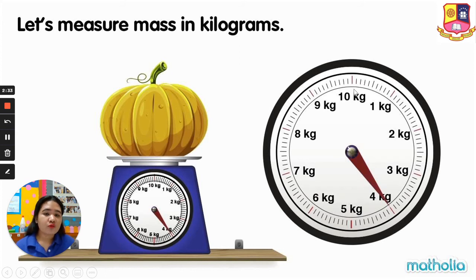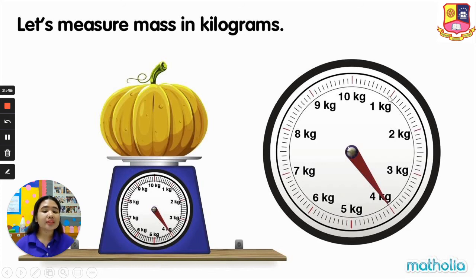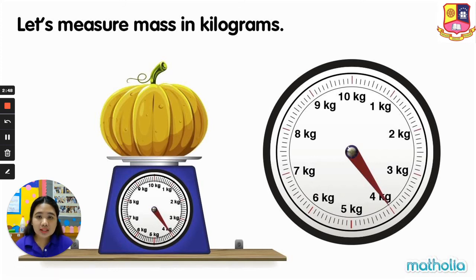So if this is 1 kilogram, 2 kilogram, 3 kilogram — between them, the small lines represent 1 kid, 2 kid, 3 kid, 4 kid, 5 kid, 6 kid, 7 kid, 8 kid, 9 kid, and 10 kid, which equals 1 kilogram. So that means in 1 kilogram, there are 10 kids.